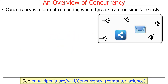So what is concurrency? Concurrency is a form of computing where threads can run simultaneously. The word 'simultaneously' is intentionally a bit vague — does it mean they run at the same time, which is physically parallel, or does it mean they are interleaved in such a way that it appears they're running at the same time? That's one of the distinctions between concurrent and parallel.